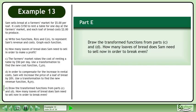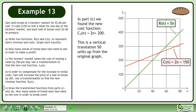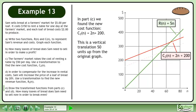In part E, we'll draw the transformed functions from parts C and D. How many loaves of bread does Sam need to sell now in order to break even? In part C, we found the new cost function, C2 equals 2n plus 200. This is a vertical translation 50 units up from the original graph. The animation shows the cost graph being vertically translated 50 units up.